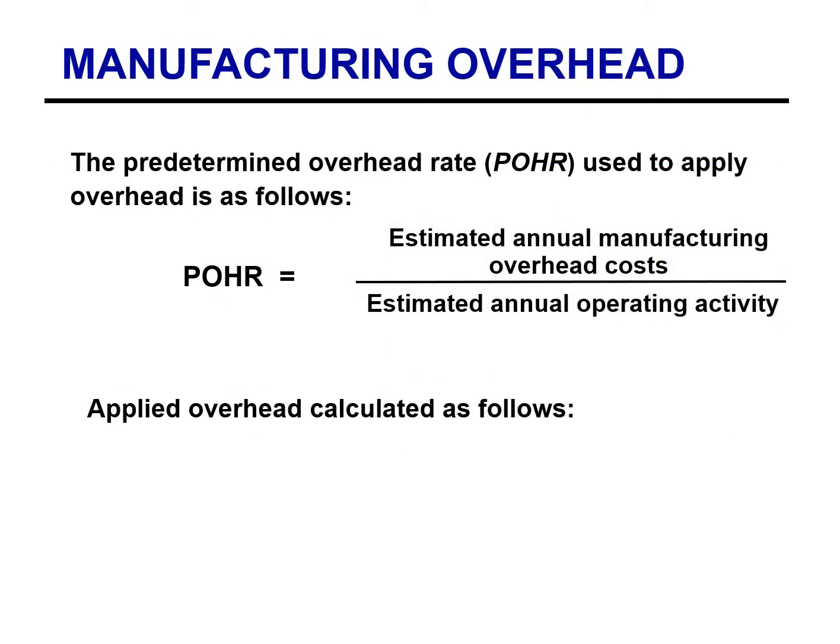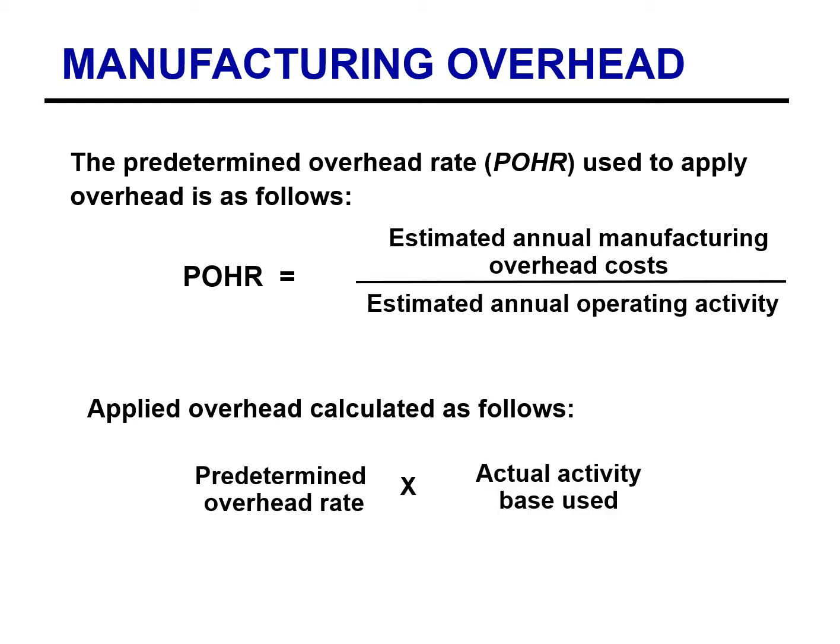The predetermined overhead rate is based on the relationship between estimated annual overhead costs and an expected annual operating activity, or allocation base. In traditional product costing systems, this measure is usually some volume-based operating activity, such as direct labor hours, direct labor costs, or machine hours. Using the predetermined overhead rate, we assign manufacturing overhead costs to jobs or products based on the actual activity.